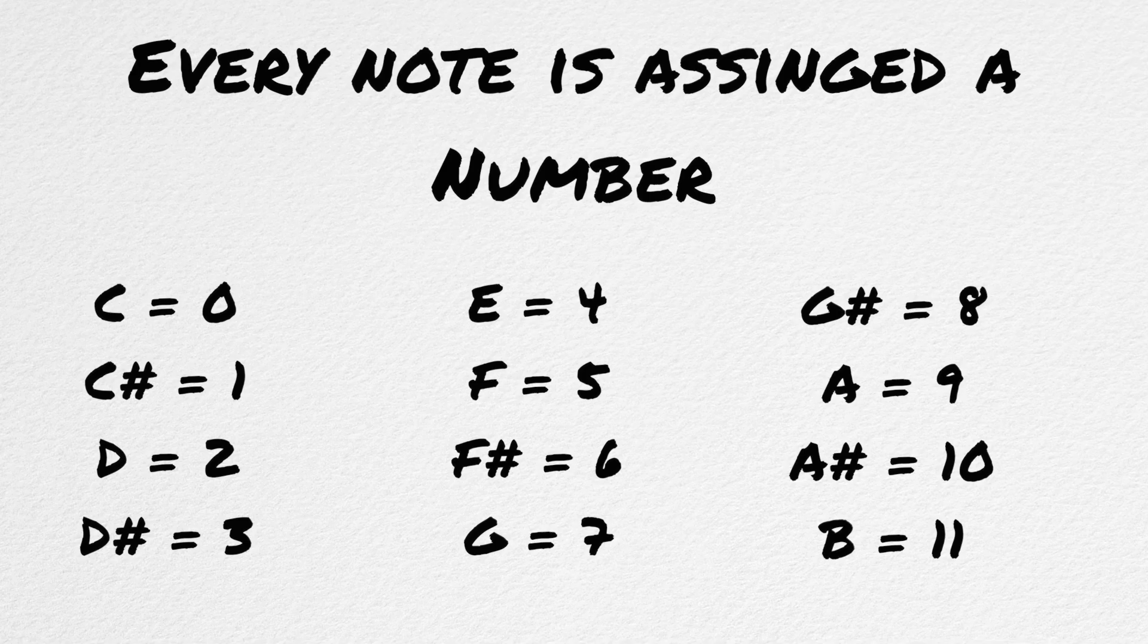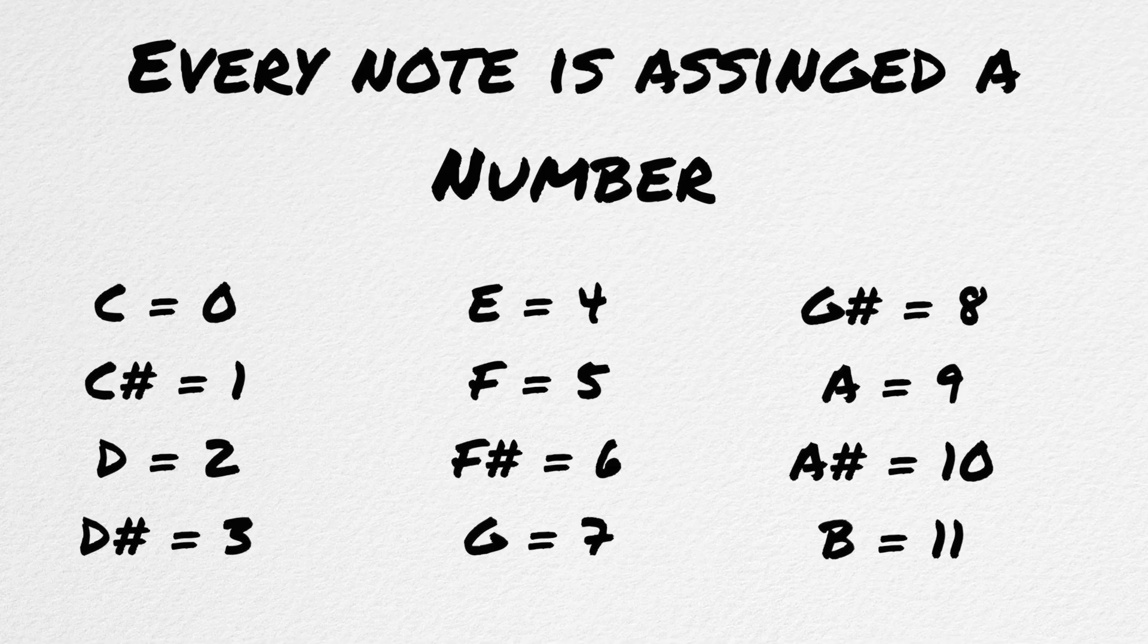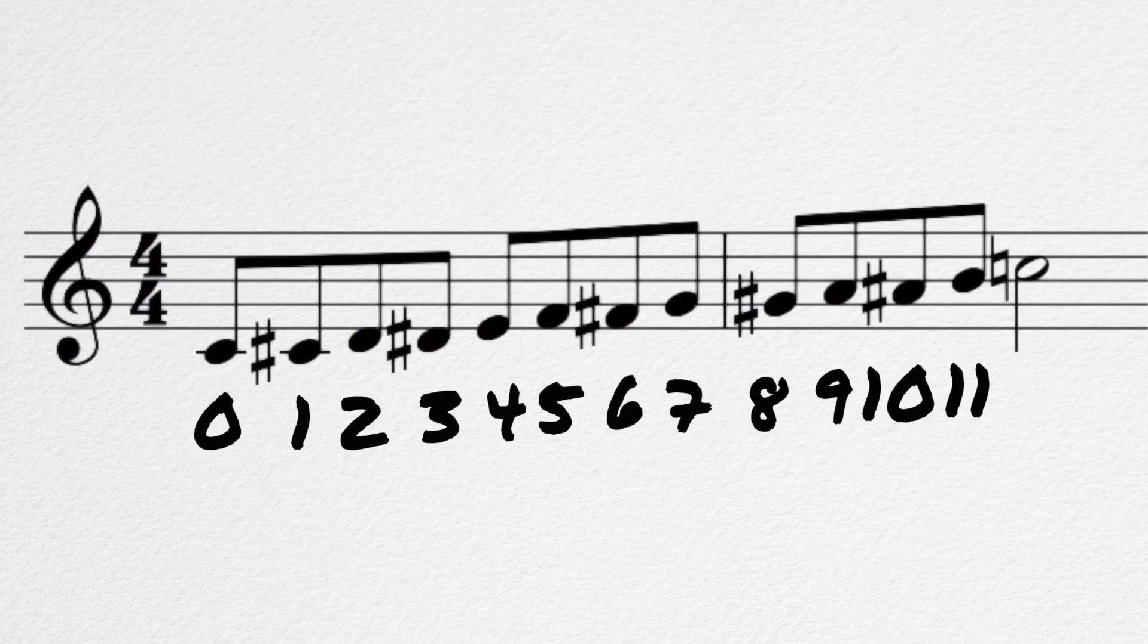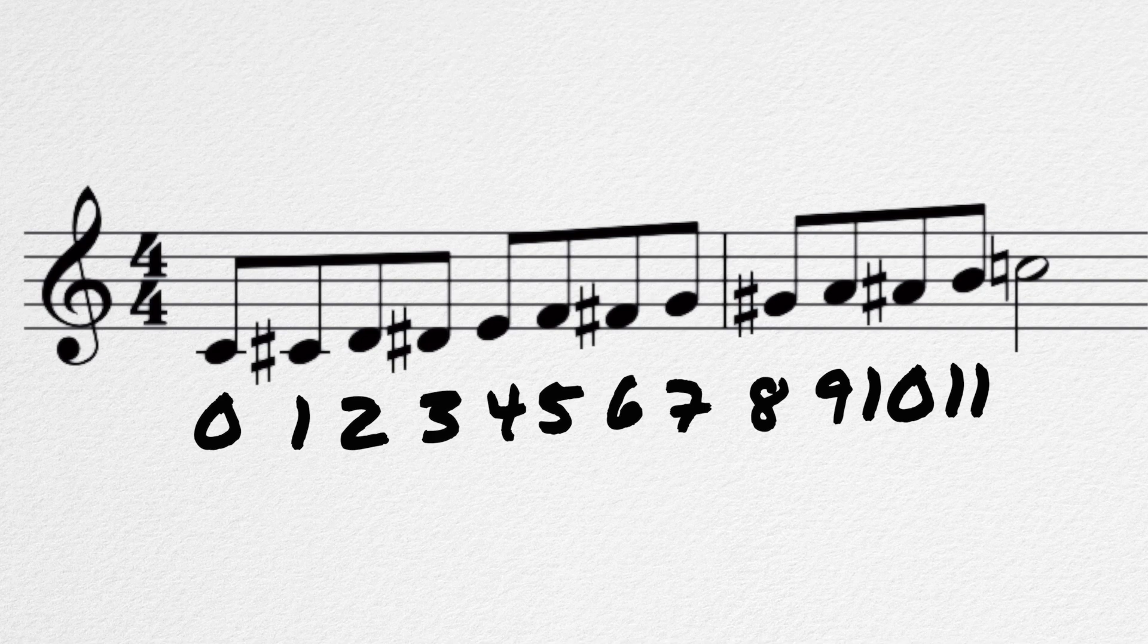In 12-tone music, each of the pitches are assigned a number. In this case, we'll say that C equals zero. Any note could be assigned zero, as long as the relationships to the other notes are correct. Every other note is assigned a number based on the number of half steps it is away from C. D-flat would be one, D would be two, etc. So a chromatic scale starting on C would look like this.